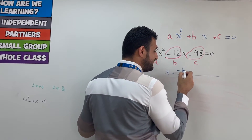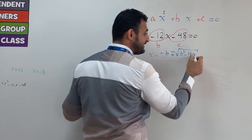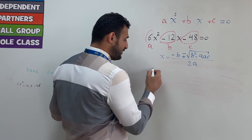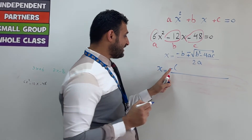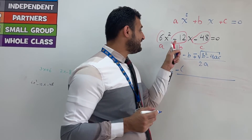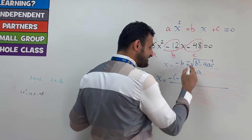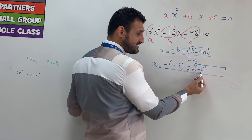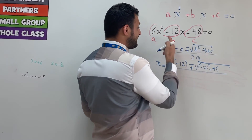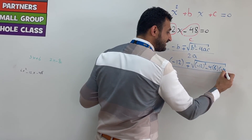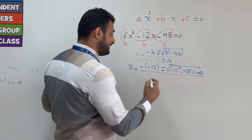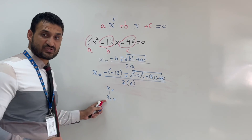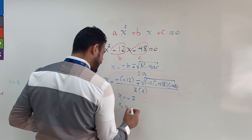Substitute into the quadratic formula: x = (−b ± √(b² − 4ac)) / 2a. With a = 6, b = −12, c = −48: negative of (−12) is +12, plus or minus root of (−12)² − 4(6)(−48), all over 2(6). Using the calculator twice gives x = 4 and x = negative 2 as the two solutions.